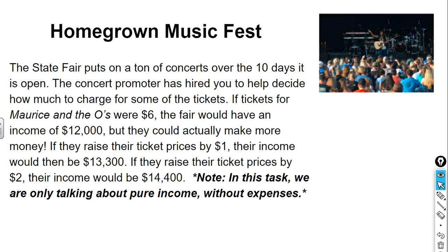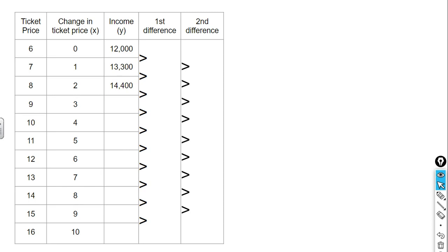The state fair puts on a ton of concerts over the 10 days it's open. The concert promoter has hired you to help decide how much to charge for some of the tickets. If tickets for Maurice and the O's were $6, the fair would have an income of $12,000, but they could actually make more money. If they raised their ticket prices by $1, their income would be $13,300. If they raised their ticket prices by $2, their income would be $14,400. In this task, we're not going to be considering expenses — we're only looking at income. We are being asked to represent this with multiple representations, just as we did with linear and exponential functions earlier in the school year.